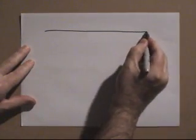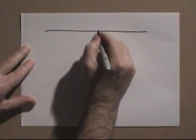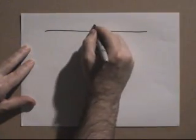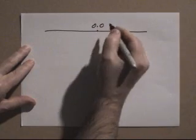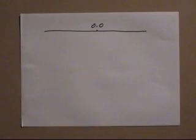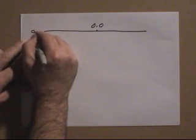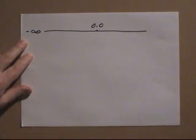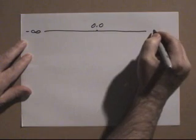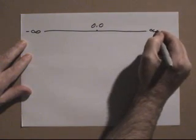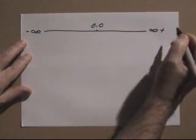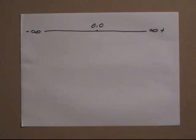On that number line they have zero point zero. Since the universe is made of atoms, what can be nothing? On one end of the number line they have negative infinity, on the other end they have positive infinity. Again, since the universe is made of atoms, what can be infinite?